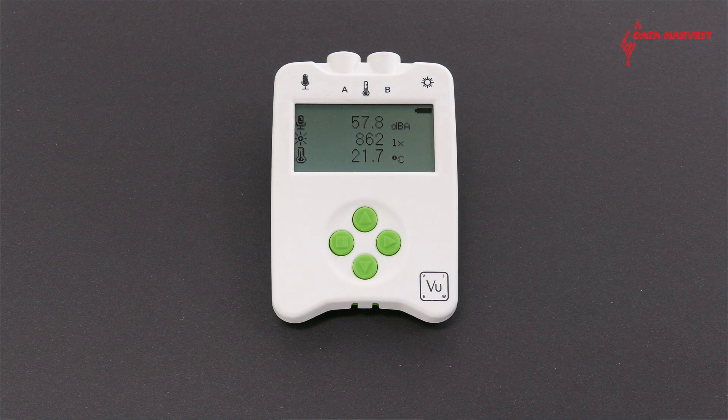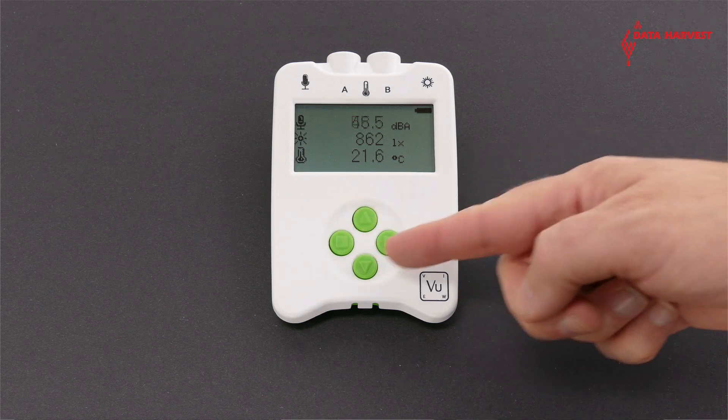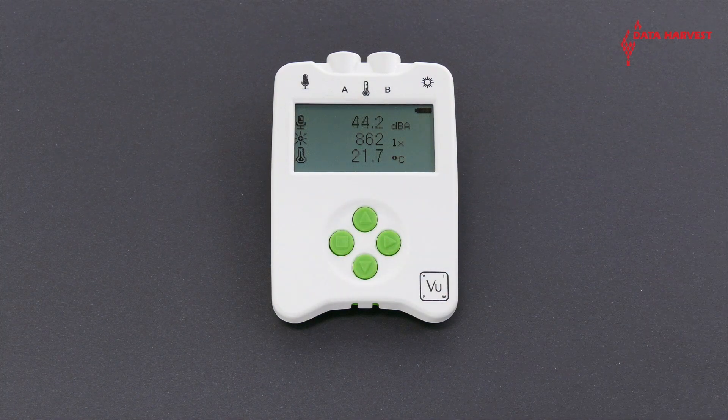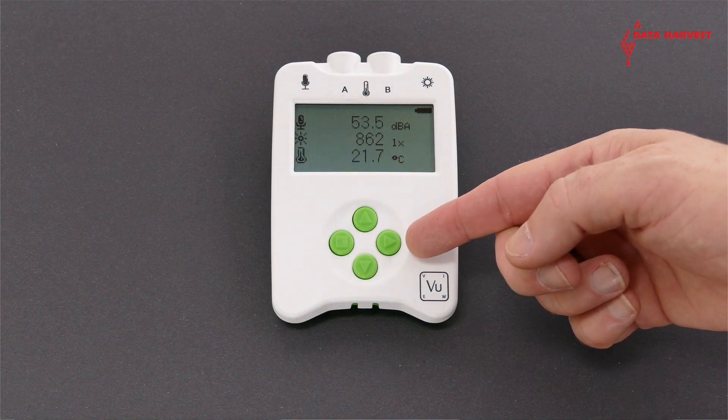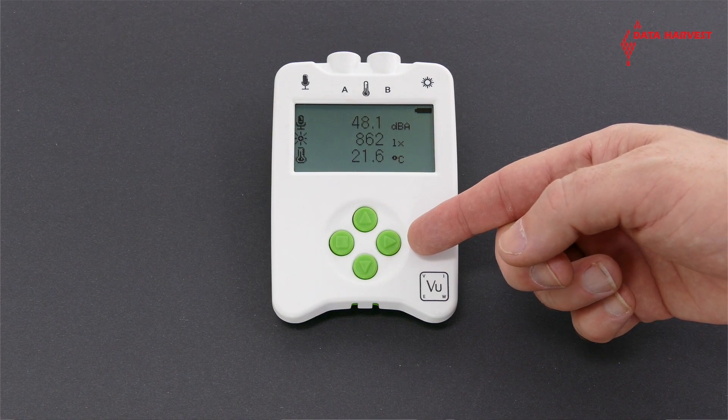VIEW has four green buttons which are used to navigate its menus. The right arrow button is used to select a function, confirm a choice, or take a sample.